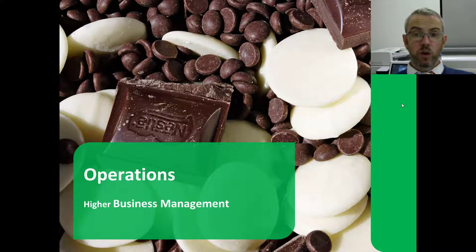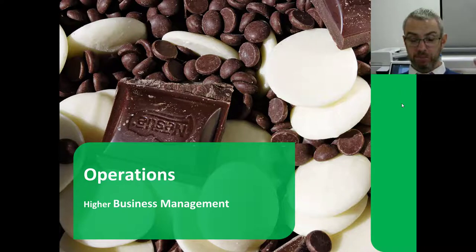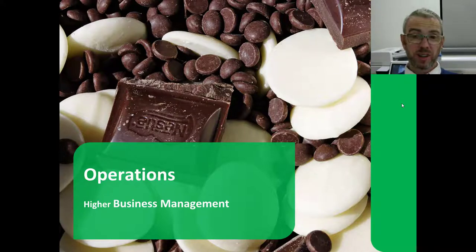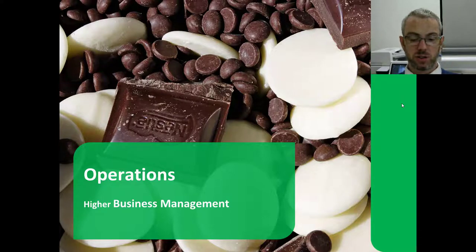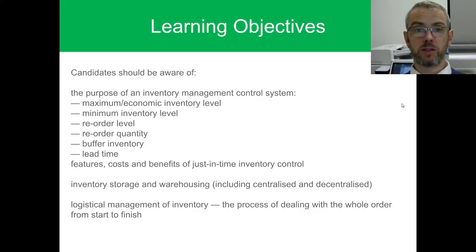Right, we're moving on now to operations. Operations covers a whole range of things - it's basically about how you make and produce the goods or services that you're wanting to get to the market. We're going to look at inventory management, give you a short background to production including suppliers, and then there'll be further videos about just-in-time stock control and quality.